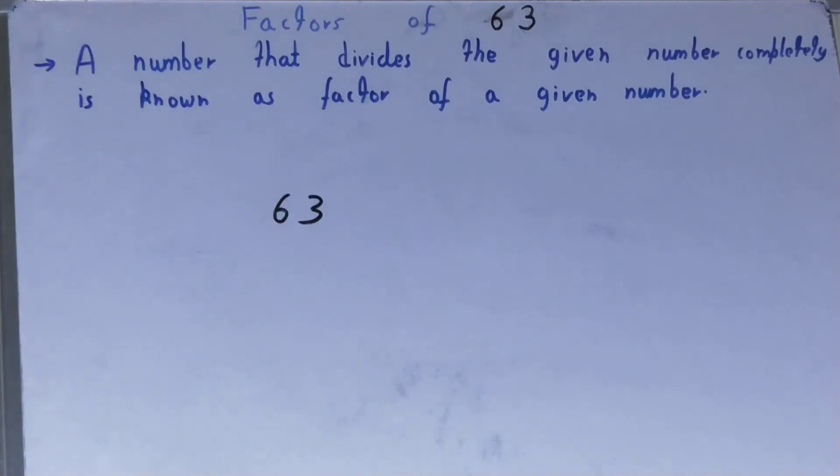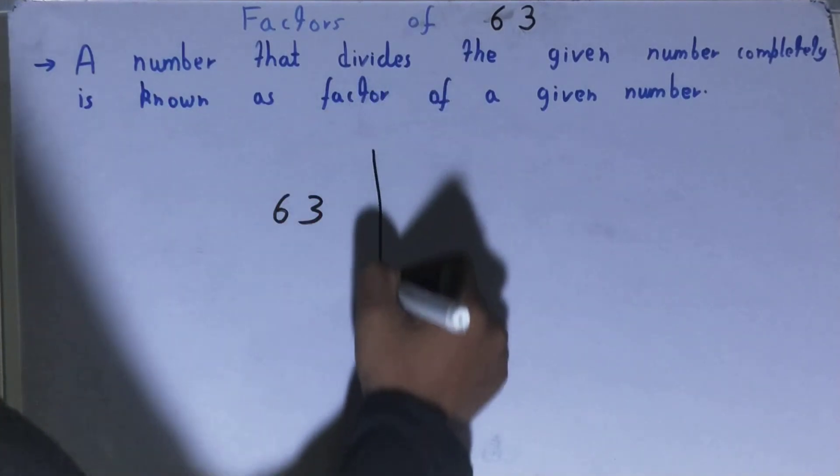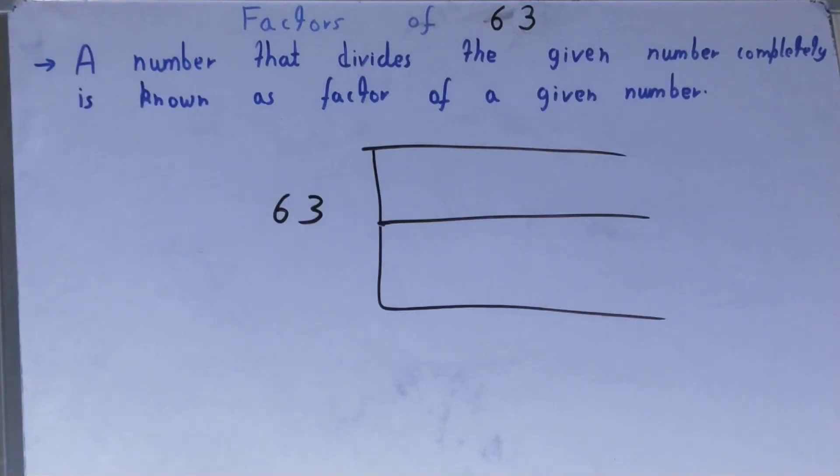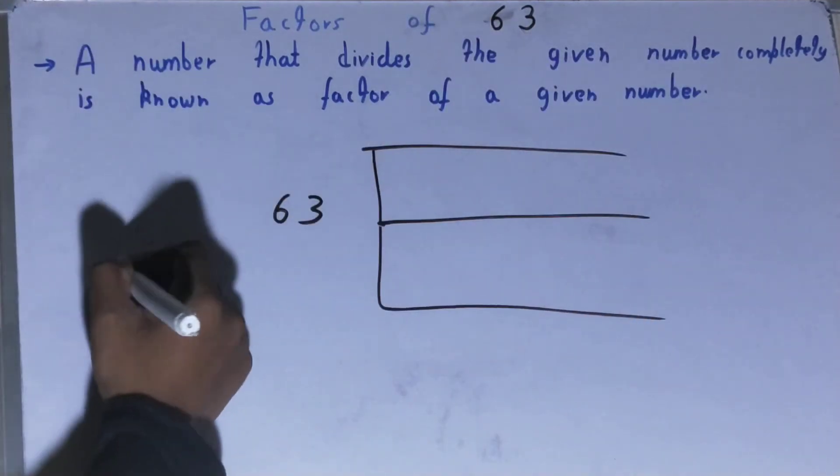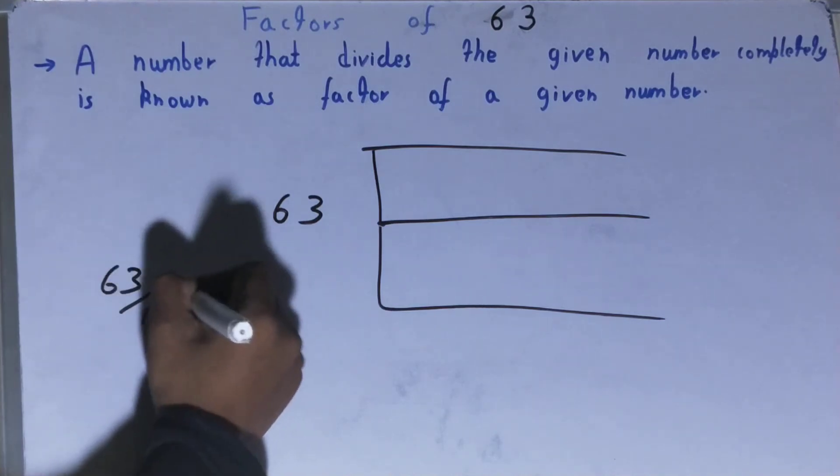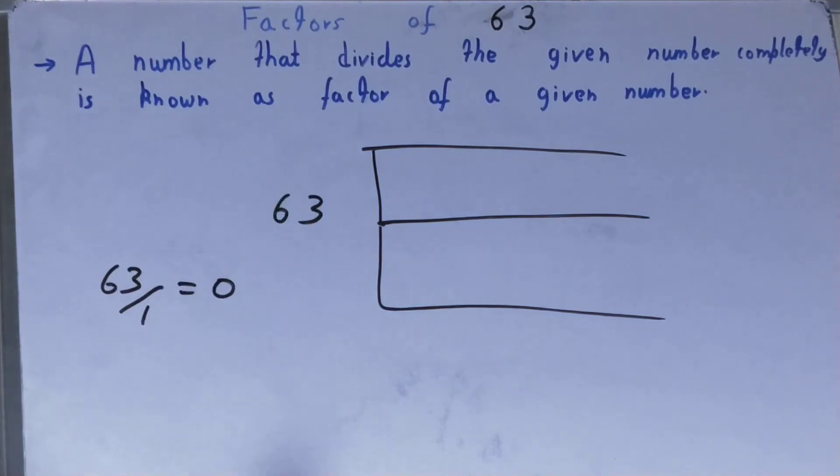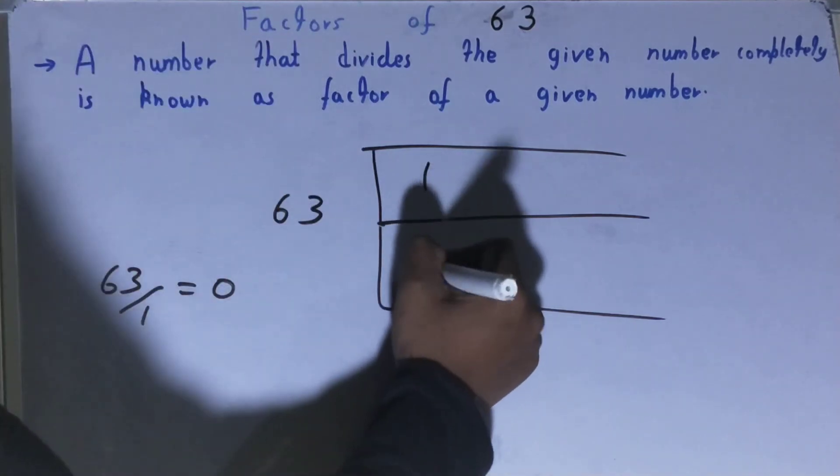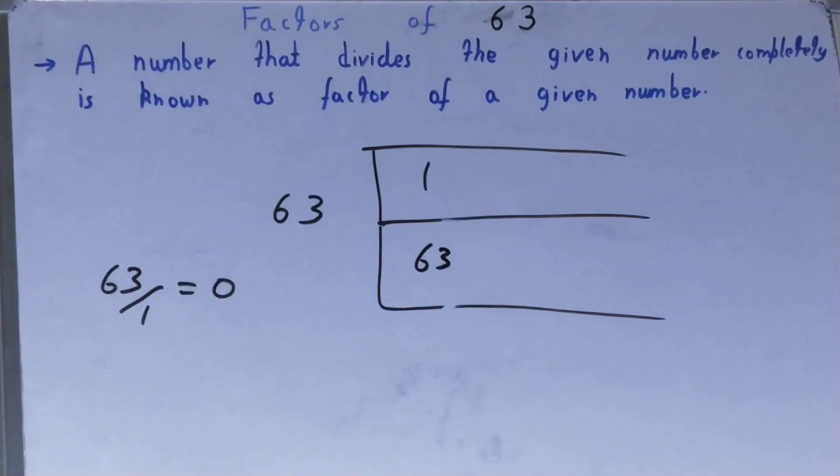Now let's come back to our main topic. What will be the factors of 63? We'll start with the lowest natural number, which is 1. We'll divide 63 by 1. Will we get the remainder zero? Yes, so 1 is a factor of 63. And with the help of this 1, we can also determine another factor for 63. How? 1 times what is 63? 1 times 63 is 63. So 63 is also a factor.